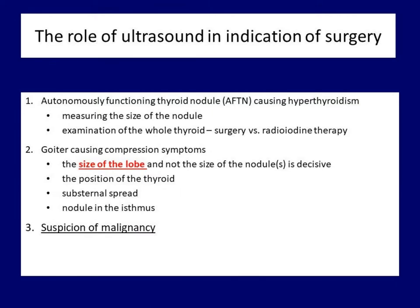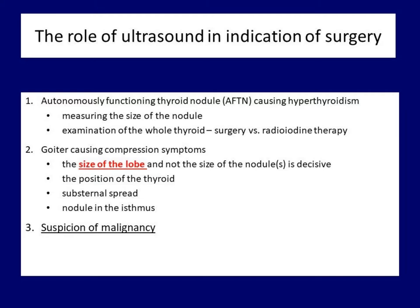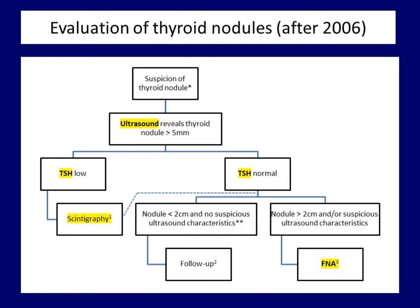The third cause of surgery, most commonly discussed in the literature and what guidelines focus on, is malignancy or suspicion of malignancy. The algorithm usually suggested by guidelines published after 2006 is as follows: if a nodule is suspected, ultrasound and TSH determination should be performed. The role of scintigraphy is mainly restricted to patients with low TSH. In euthyroid and hypothyroid patients and those in whom thyroid autonomy was excluded, ultrasound determines the next step. The indication of FNA depends on the size of the nodule and the presence of suspicious ultrasound characteristics.